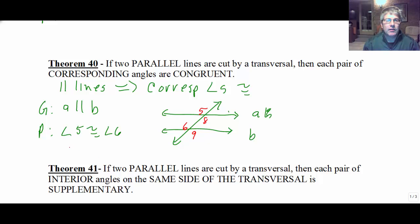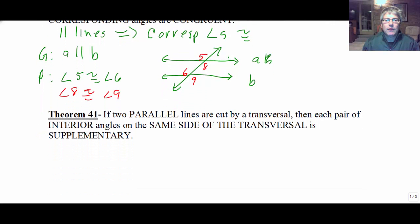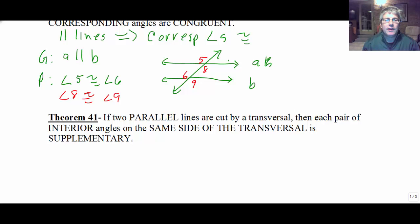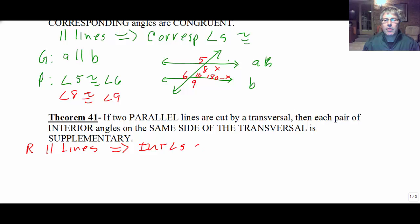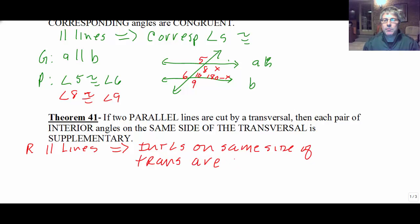In fact, angle 8 would also be congruent to angle 9, because those two are also corresponding angles. Theorem 41 says if two parallel lines are cut by a transversal, then each pair of interior angles on the same side of the transversal is supplementary. So that might be like angles 8 and 10 having to be supplements — one could be X, one would be 180 minus X. So our reason in a proof: parallel lines imply interior angles on the same side of the transversal are supplementary.